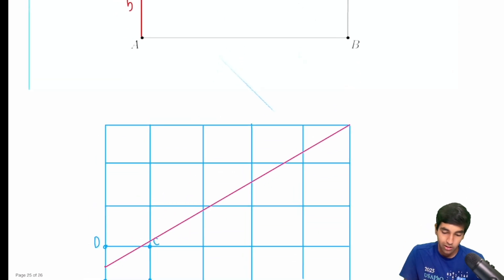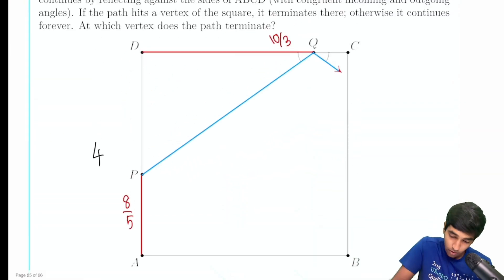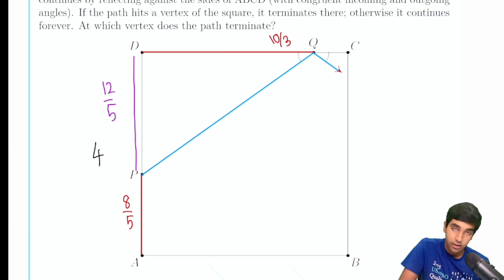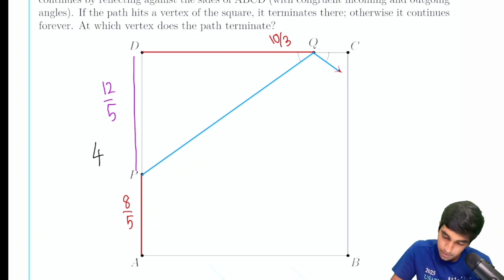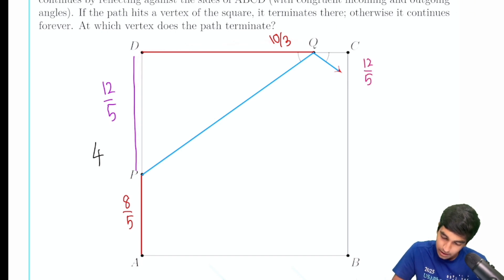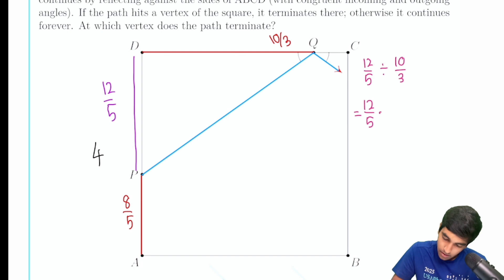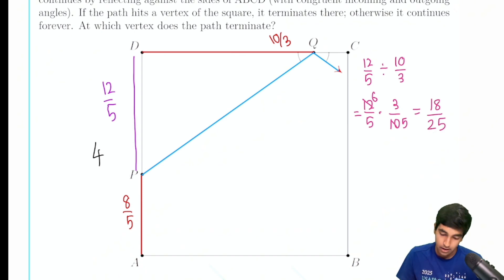What's the slope of this line? We have the quantity 12/5 on one side (since AP = 8/5 and the side is 4, the remaining distance is 12/5), and 10/3 on the other. The slope is rise over run: (12/5) divided by (10/3), which equals 12/5 × 3/10 = 36/50 = 18/25.